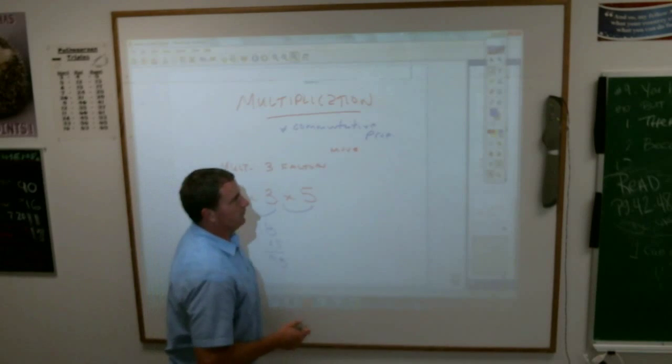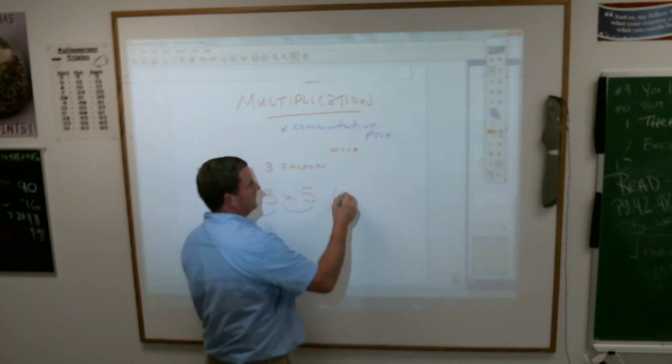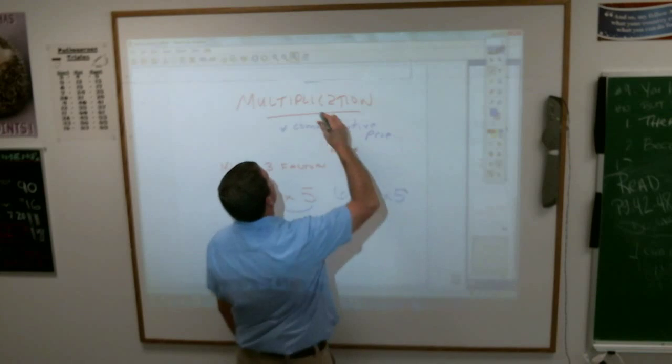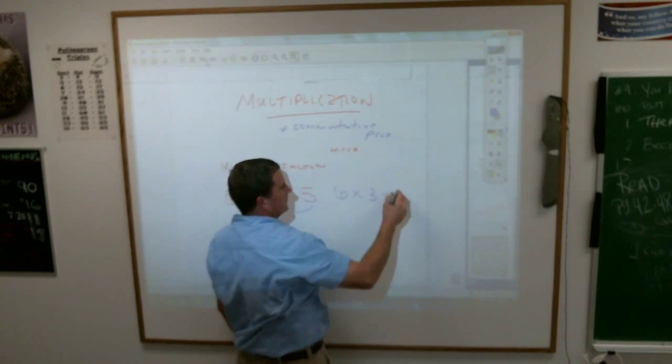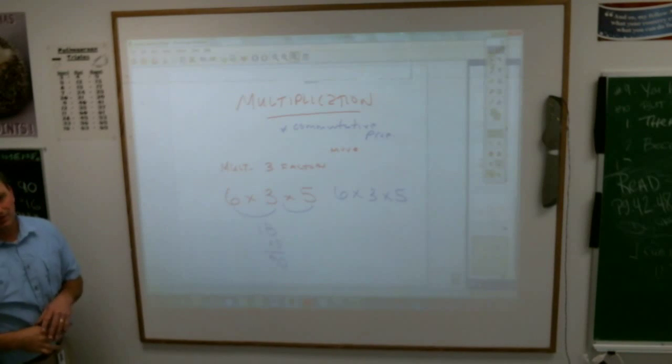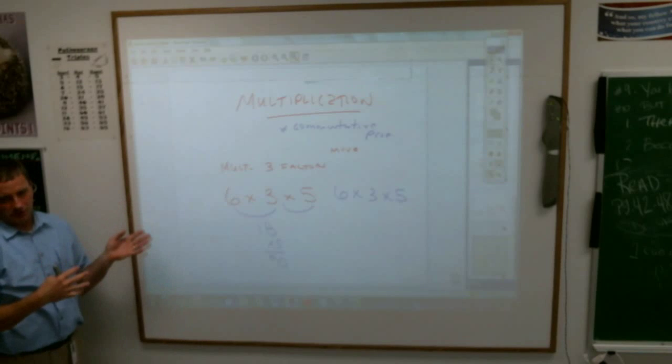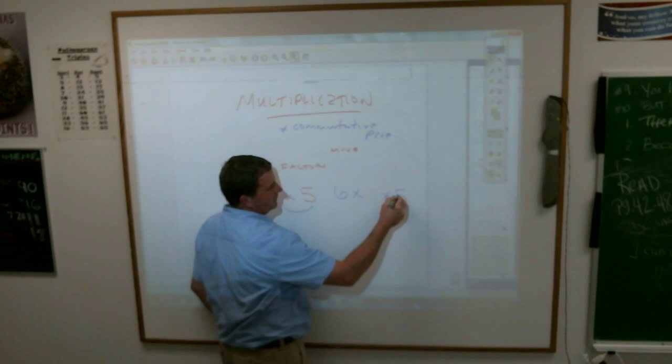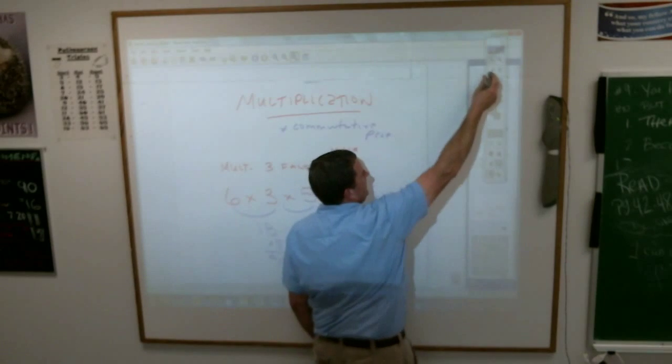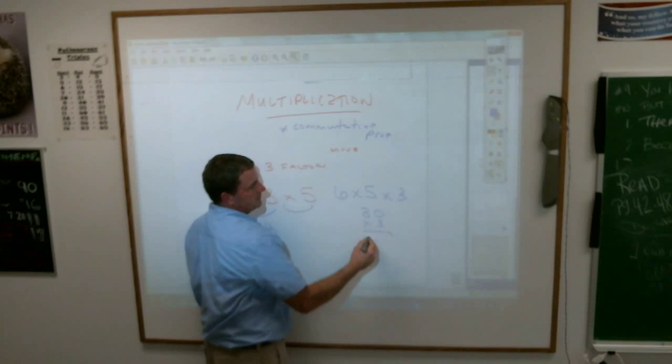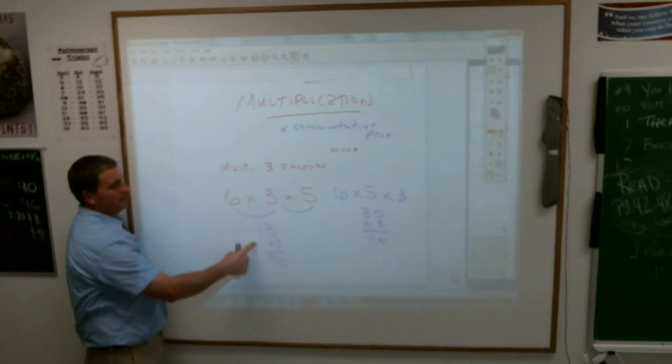But we do like to, if we can, make things easier. If I have six times three times five, because of the commutative property I can change those numbers around because some multiplication problems are easier than other multiplication problems. For example, if I were to move this three over here and take this five and slide him over here, this becomes a much simpler problem because six times five is thirty, and thirty times three is a lot easier to do than doing all this five times eight, carry the one, or whatever.